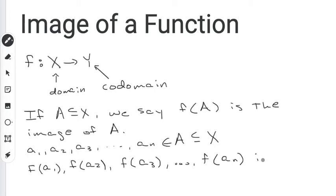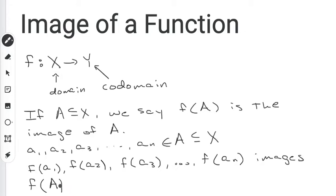f of a1, f of a2, etc. — these are called the images. So when we talk about f of a, what we're doing is we're taking every single element that's in a, getting the set of all the images by putting each element through the function. That is what's known as the image of a function.